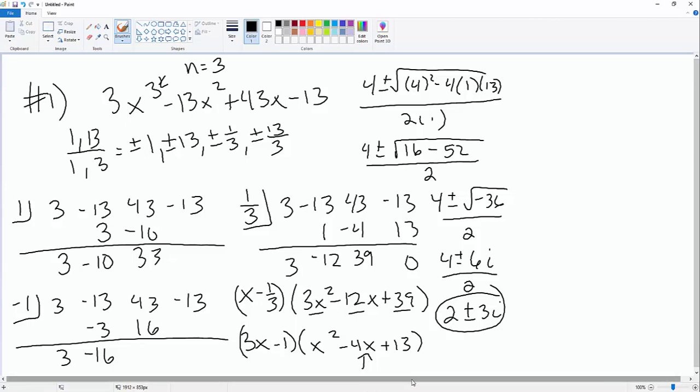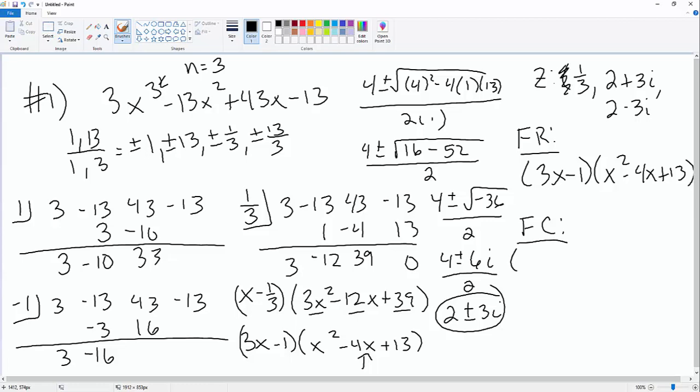So the first part says factor completely, find all the zeros. So my zeros are going to be one-third, 2 plus 3i, and 2 minus 3i. Then factoring it completely over real numbers, that's going to be 3x minus 1 times x squared minus 4x plus 13, because there's no imaginary numbers there. And then factor over the complex, so that would be 3x minus 1 times x minus 2 plus 3i, and then x minus 2 minus 3i.